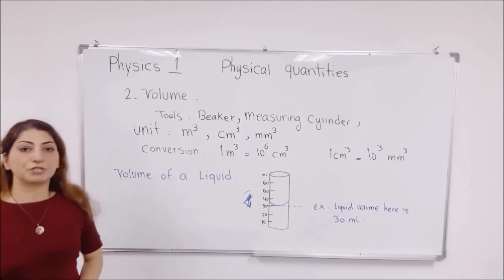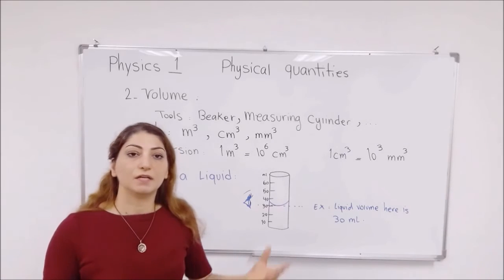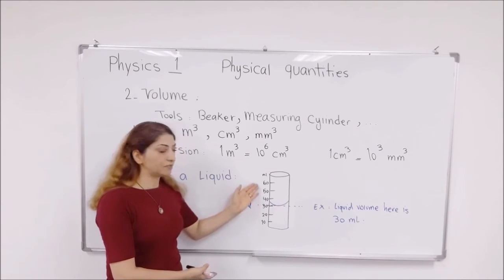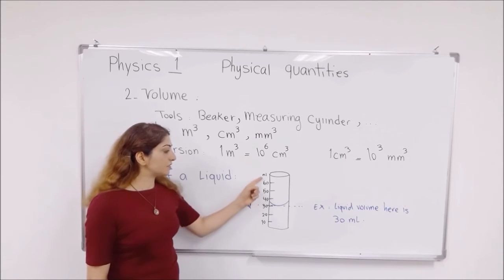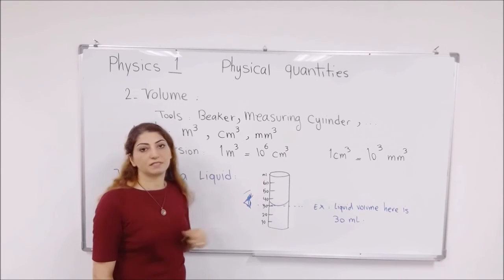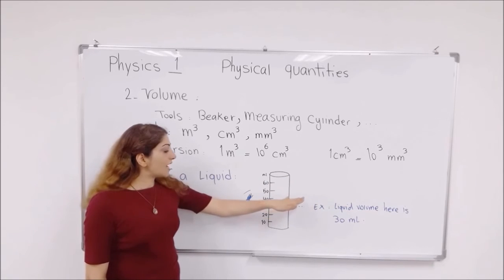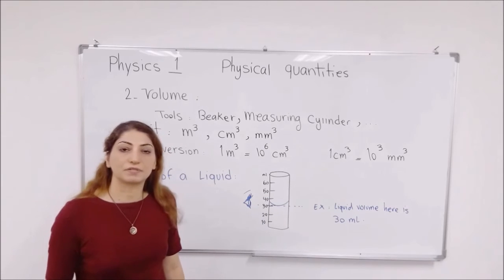How to measure the volume of a liquid? You simply take a measuring cylinder, and it is graduated here. You can see the marks. And then it is written as milliliter or centimeter cube. You pour the water in, and the water appears as a little curve. It is not straight.